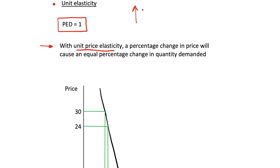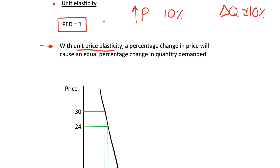So if we were to increase price for a good by 10%, unit price elasticity will mean that our change in quantity will also be 10% — and this could be an increase or a decrease in quantity. So unit elasticity could be our PED equal to 1, or it could be equal to minus 1. We ignore the negative sign when we're talking about this.